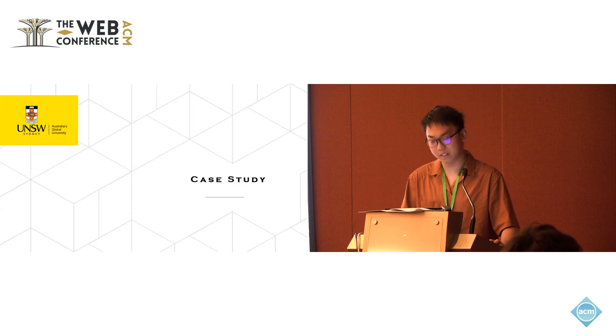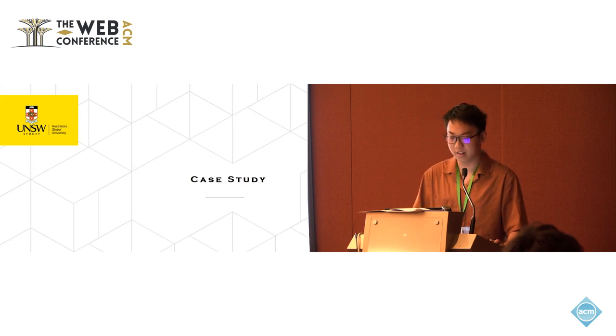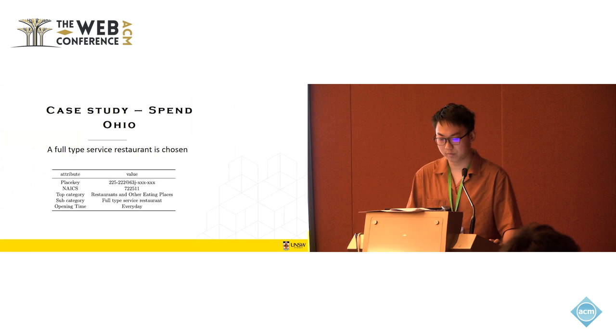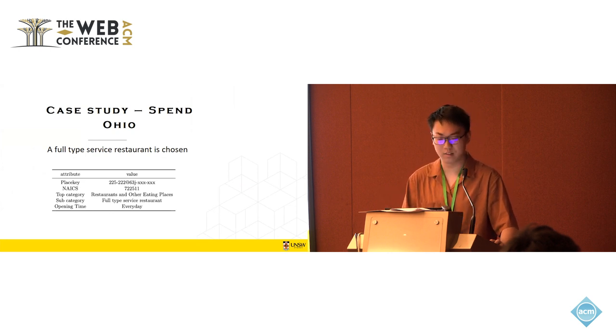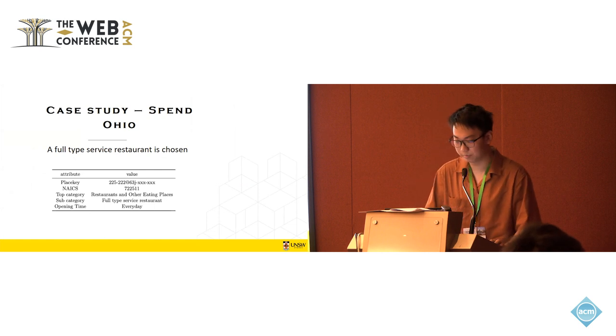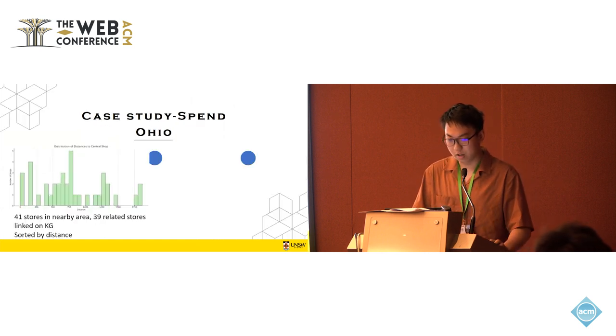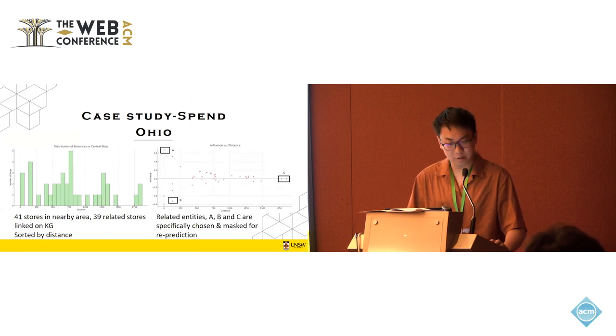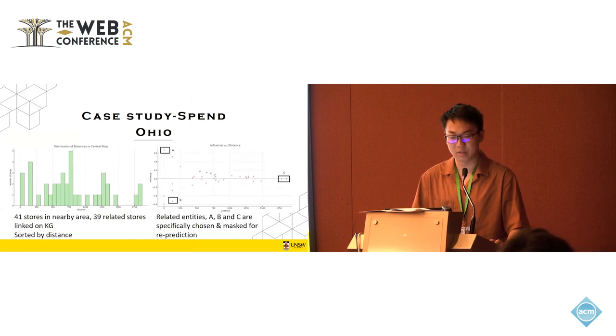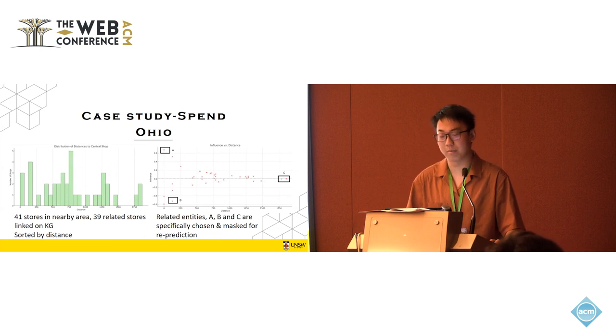Also to verify the interpretability, I conducted a case study, which is based on the SafeGraph Ohio dataset. We chose one entity, which is full type restaurant. It's selected because it has complete records every day, and it's in a general category, which is restaurant. It's not like some specialized categories, like golf courses or country clubs or something else. So according to the set threshold, there are like 41 stores in nearby area, but at last, there are only 39 related stores linked on our established knowledge graph.